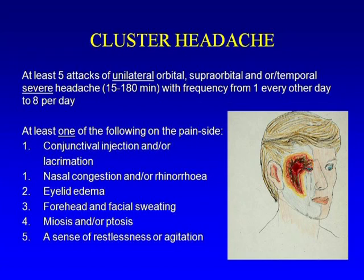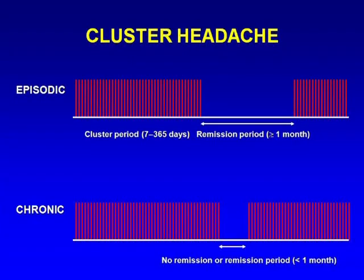For the classification, you need at least five attacks, each lasting 15 to 180 minutes, with at least one autonomic criterion. This is a real patient having a cluster headache attack — you can see ptosis, eyelid edema, and tearing with eye redness. This is quite a typical presentation.